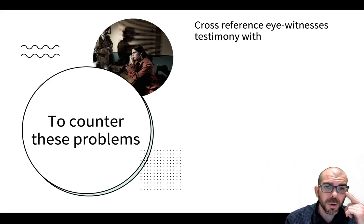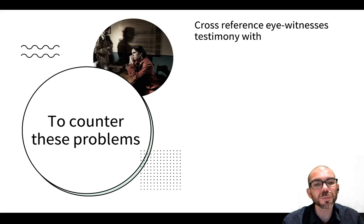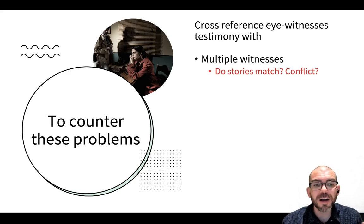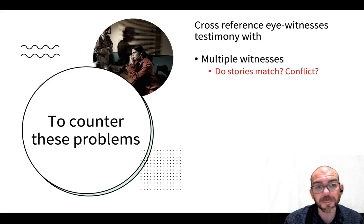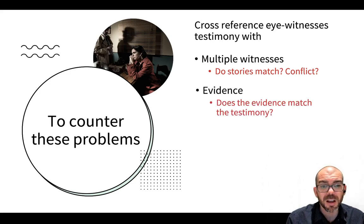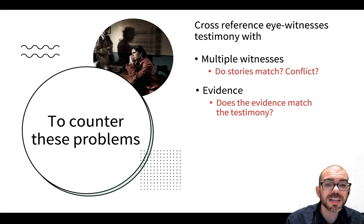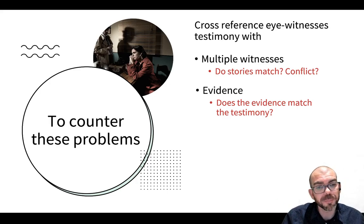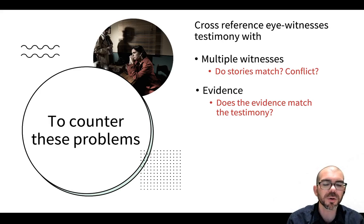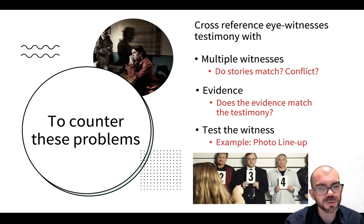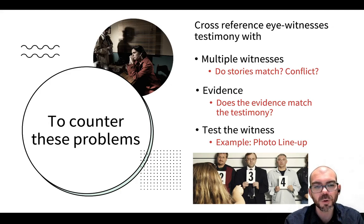To counter these issues, if you're going to work with an eyewitness, you want to cross-reference eyewitness testimony — meaning you want to confirm or disprove what an eyewitness says to try to build up or tear down what they're claiming. Are there multiple witnesses? If three, four, five, six people witnessed a crime and they all have the same story, that gives us some validity. But if they have conflicting stories, who do you trust? What about evidence collected at the crime scene — does it match what the witness says? If you find the culprit wearing a yellow shirt and the witness keeps saying they had a purple shirt, what do you do? If the evidence validates the witness, you're more likely to believe their story; if it doesn't, there might be credibility issues. You also want to test the witness — show them objects of evidence from the crime, show them suspects in a lineup — to confirm if what they saw is indeed what happened.